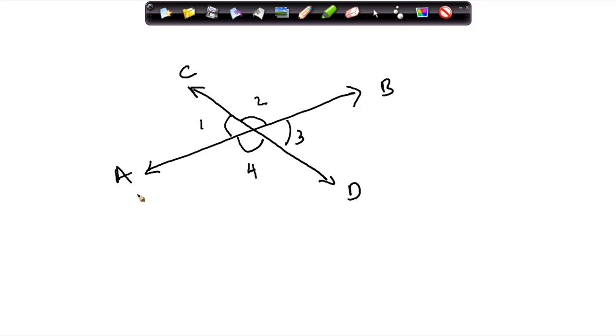We know that AB is a straight line, and whenever there is a straight line, in that case, the sum of two angles, namely angle 1 and angle 2, should be equal to 180 degrees.